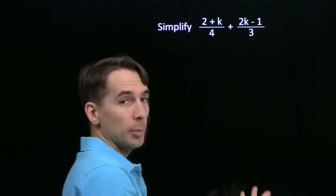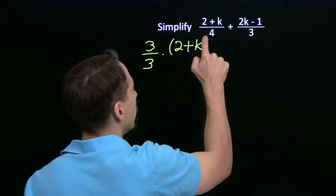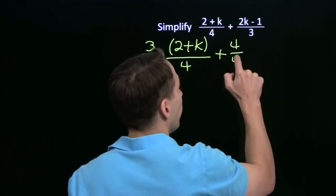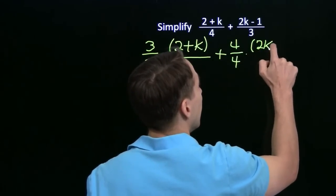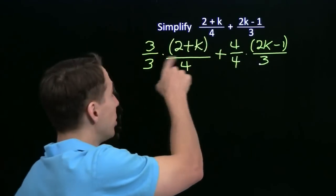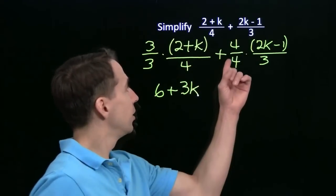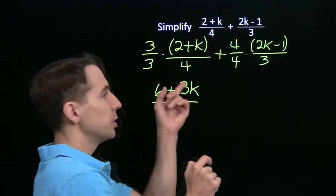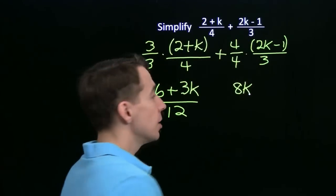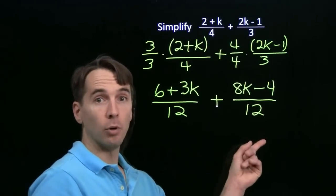We get a common denominator, which is going to be 12. We're going to multiply our first fraction by 3 over 3. I'm going to put parentheses around the numerator to remind me that I'm multiplying the whole numerator by 3. For the second one, I multiply by 4 over 4 to make the denominator 12, and again parentheses around the numerator to remind me I'm multiplying the whole numerator by 4. Using the distributive property: 3 times 2 is 6, 3 times k is 3k — denominator 3 times 4 is 12. Over here, 4 times 2k is 8k, and 4 times minus 1 gives minus 4 — and 4 times 3 is 12. The denominators are both 12, so now I can add them.